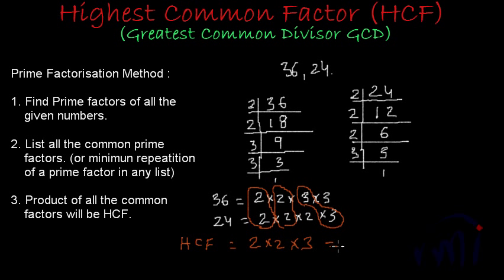Since we are writing all the common factors, it is actually the highest common factor. The third step says the product of all the common factors will be the HCF. So the HCF will be 2 × 2 × 3 = 4 × 3 = 12.